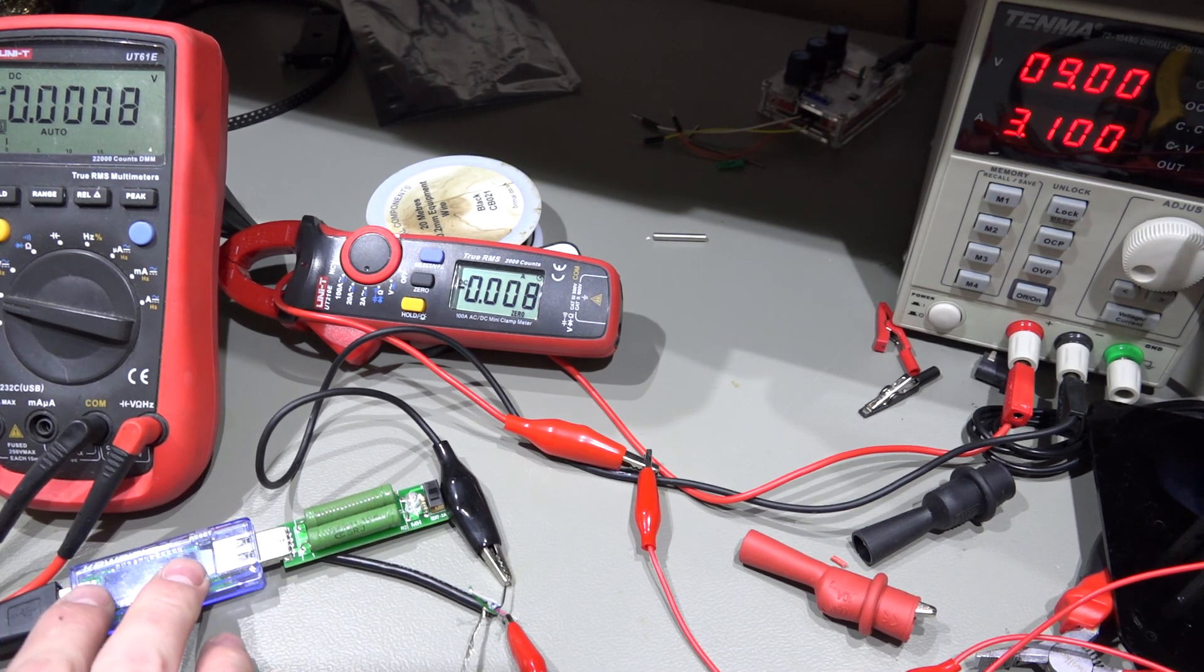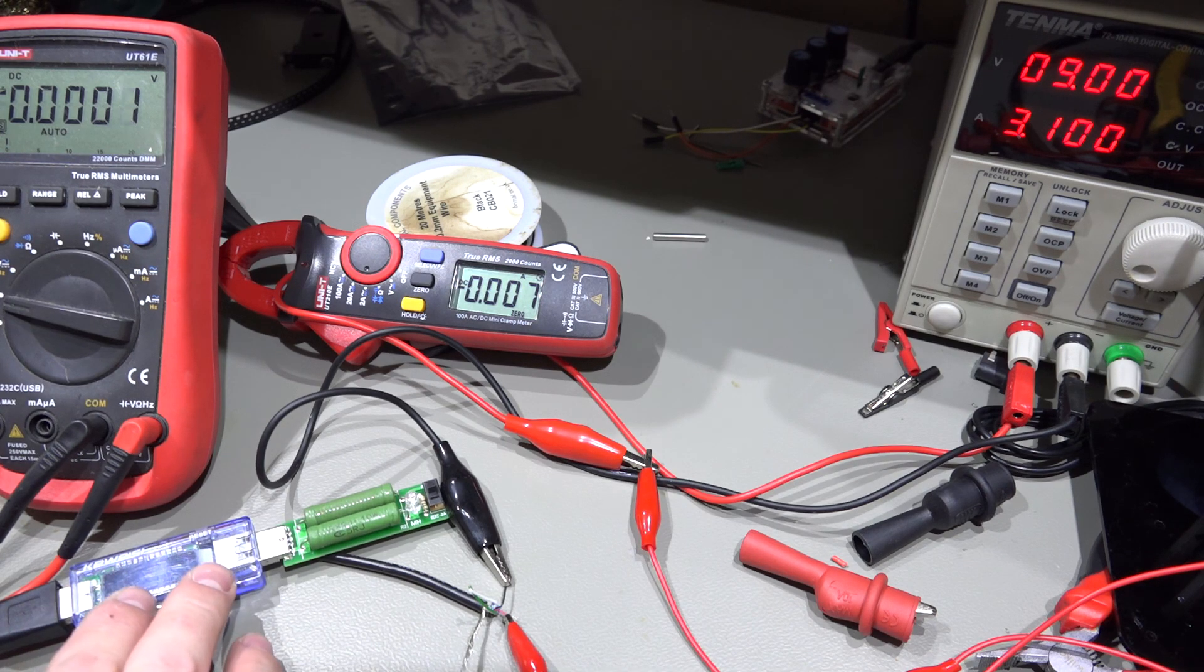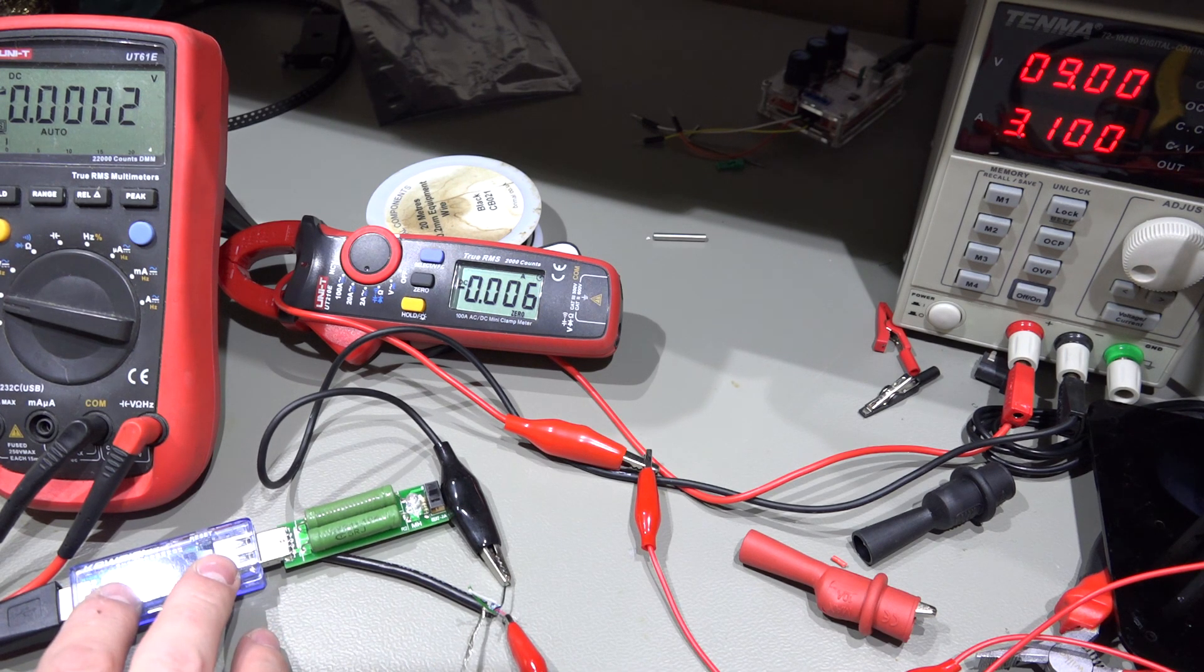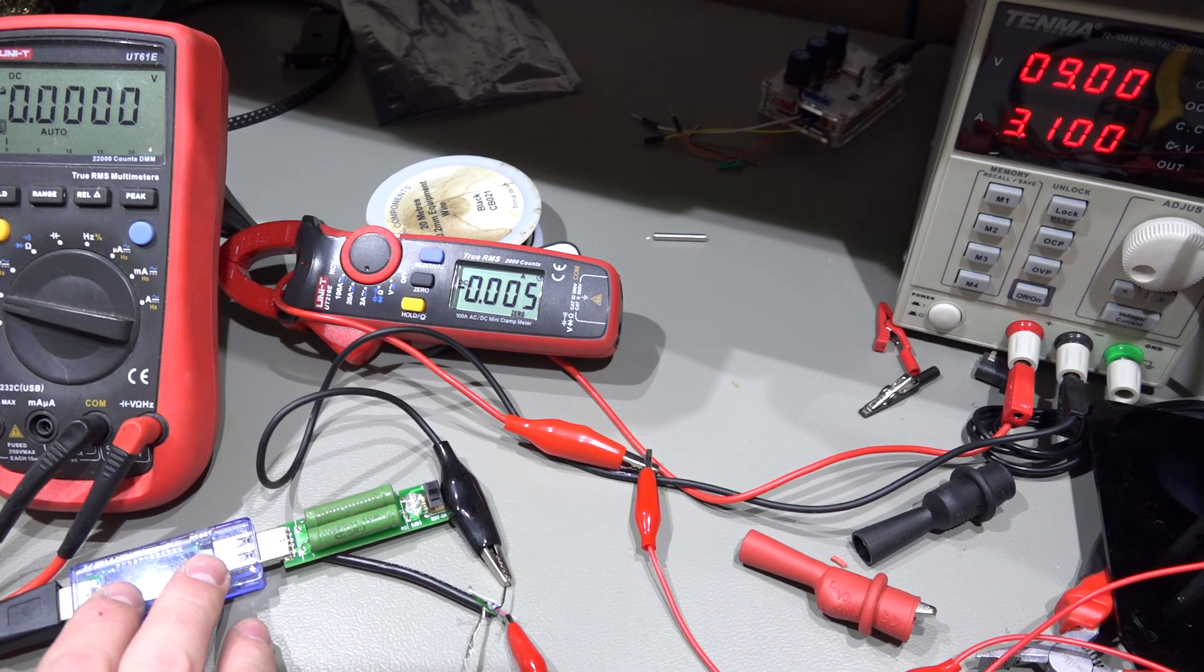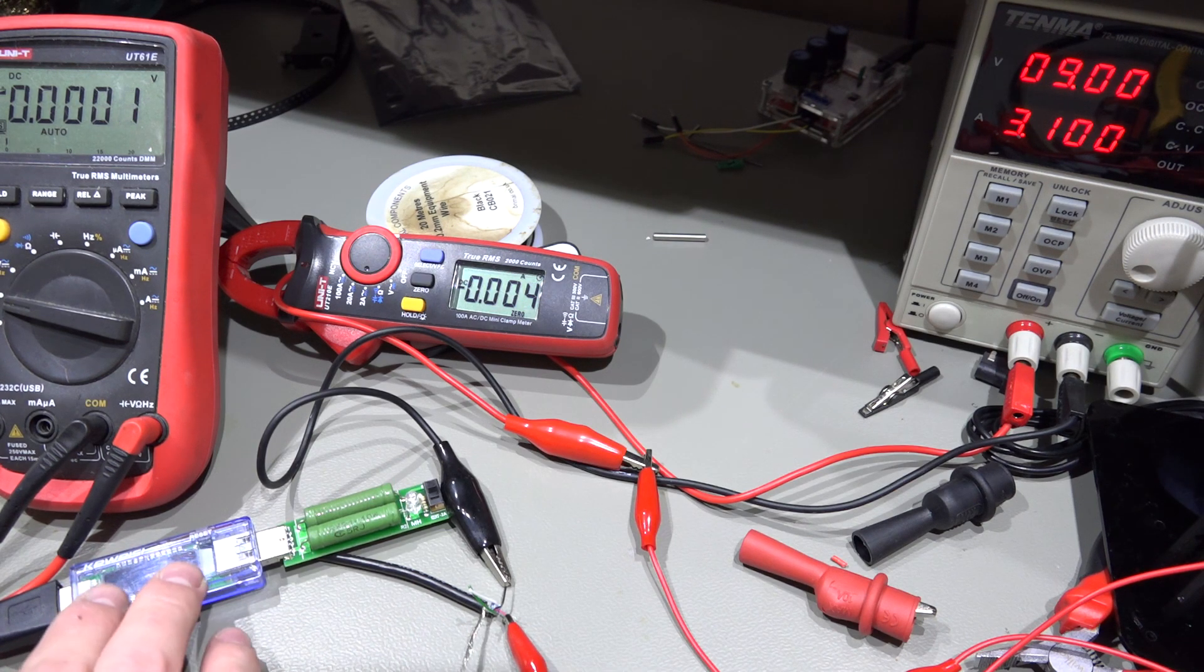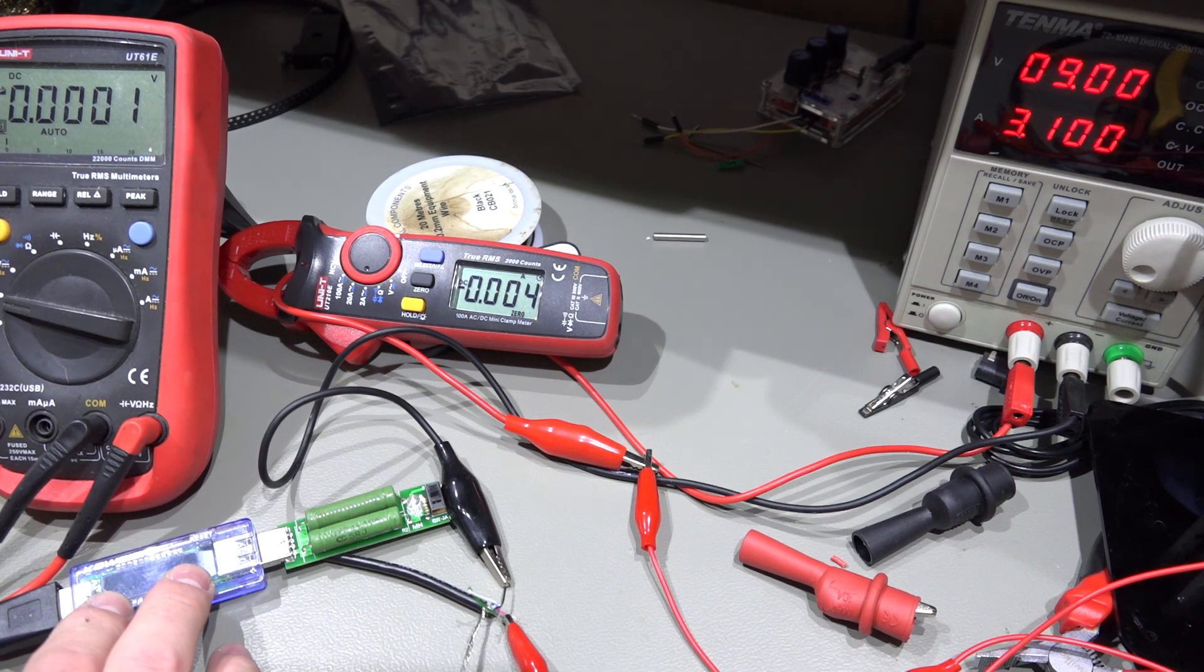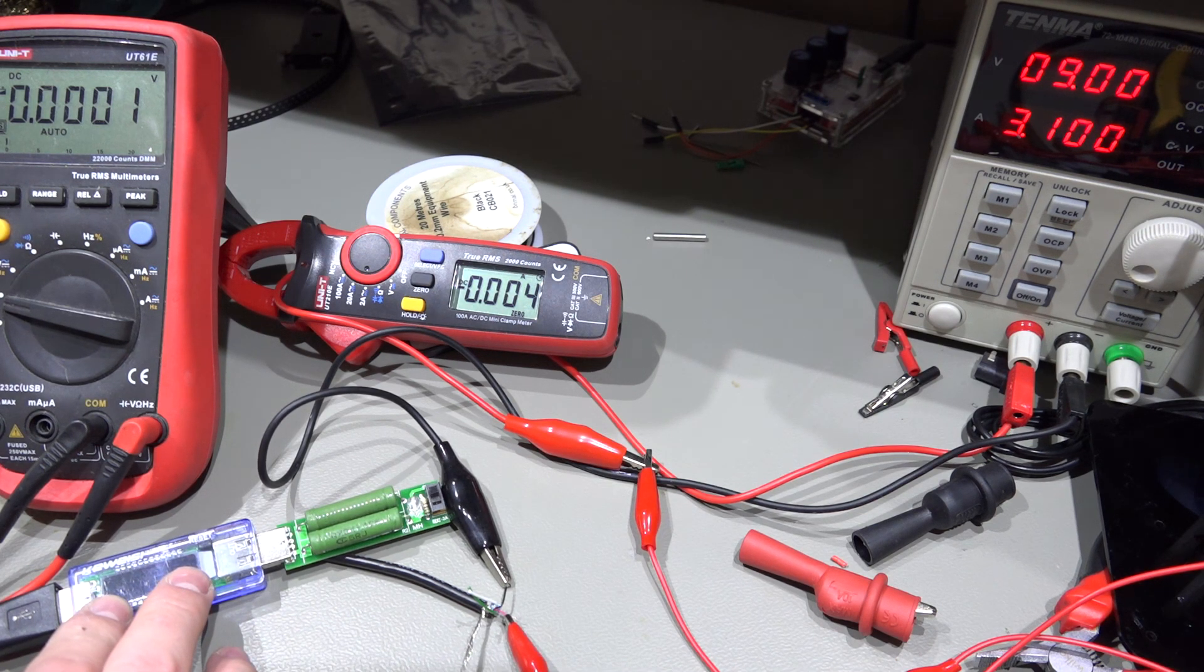We can certainly conclude from this that the current readings over a varied voltage range, apart from going down below five volts, are pretty accurate, not a problem with that. Voltage, no, that was way off. That was over about one and a half volts out of what's actually going into it.